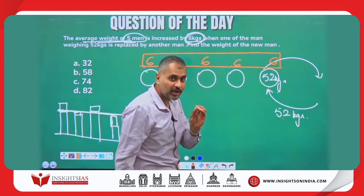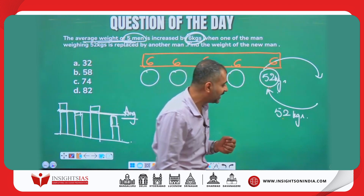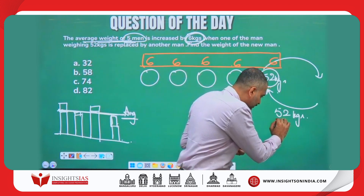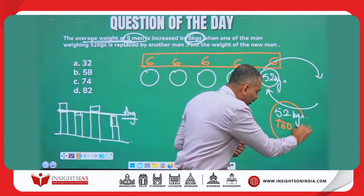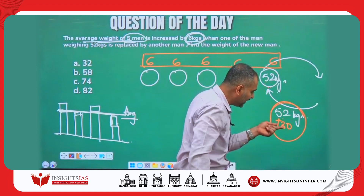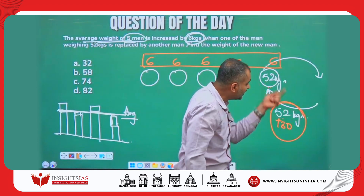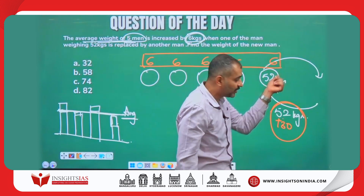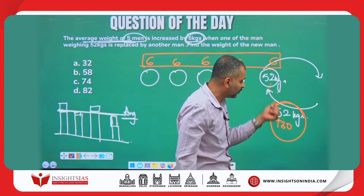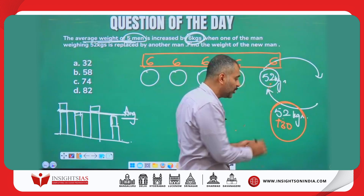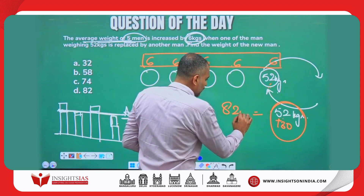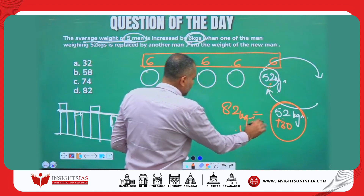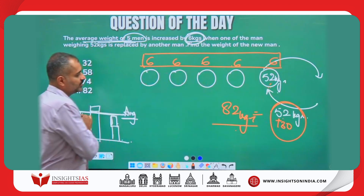So who brought that extra 30 kgs? This new person. So his weight has to be 30 kgs more than the previous person. The previous person was 52 kgs, so the new man is 52 + 30 = 82 kgs.